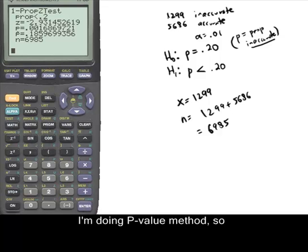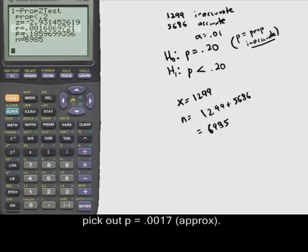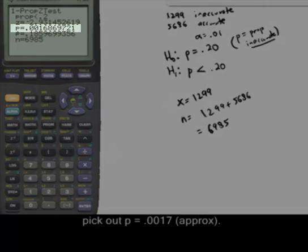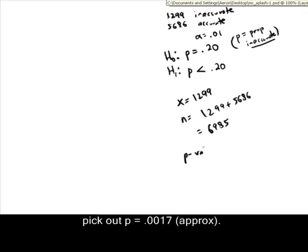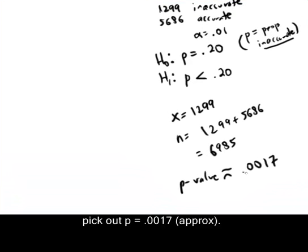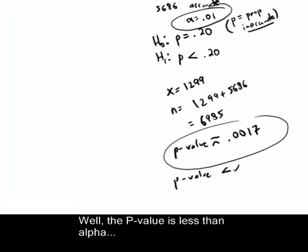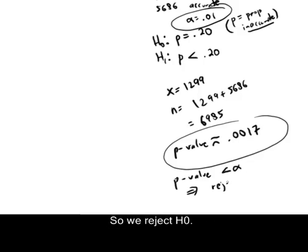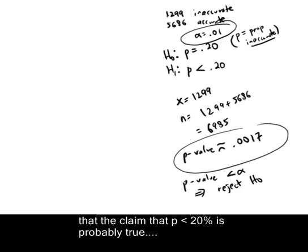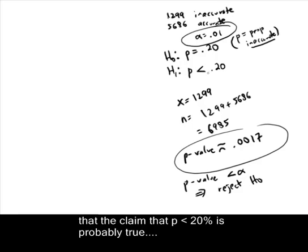And I'm doing p-value method, so the main thing I want to pick out of all of this is that the p-value is about .0017. So p-value is approximately .0017, and then you're going to compare that to your alpha. Well the p-value is less than alpha. And that means there's not a lot of support for H0, so we reject H0, and therefore we conclude that the claim that p is less than .20 is probably true, or at least it's supported by the data that we have.